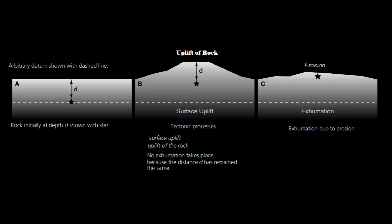The total vertical displacement of a rock relative to a reference level is the sum of exhumation and surface uplift, or burial and subduction. As shown in the diagram, an arbitrary datum is chosen. Initially the rock is at depth D. As tectonic processes occur, the surface and rock both get uplifted — no exhumation takes place because distance D remains the same. When erosion starts, D decreases; this process is exhumation.